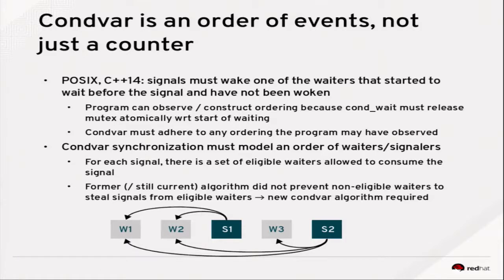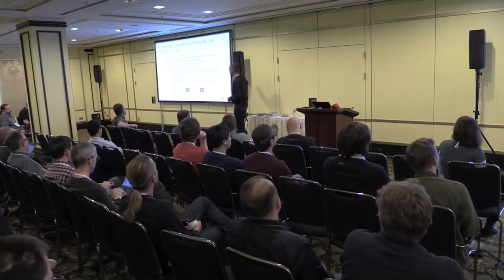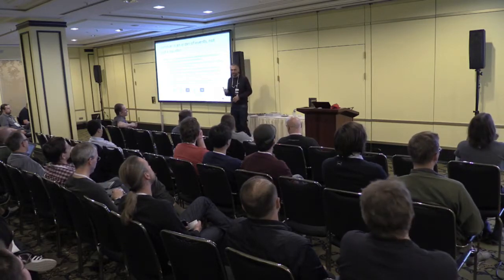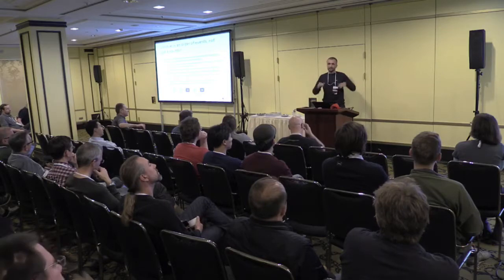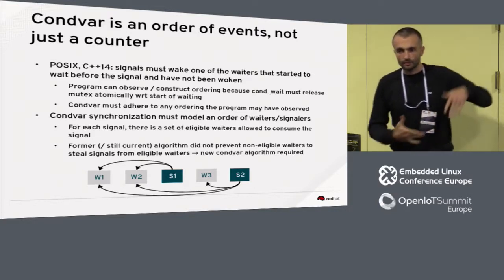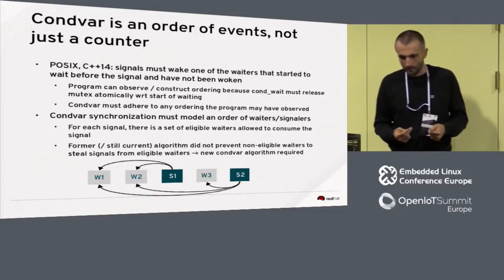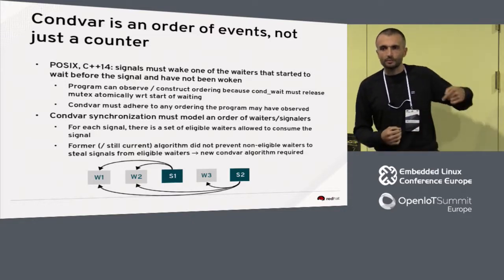The problematic thing is that the condition variable is not a counter — it's not like a semaphore or lock, which either has tokens or is acquired or not. The condition variable is essentially an order of events. This is what POSIX clarified, and also what C++14 specifies in terms of requirements on condition variables. The requirement is that signals must wake threads — one of the waiters that started before them — because the program can observe or construct an ordering of waiters and signals, since the mutex is released atomically with starting to wait. The counter-implementation must adhere to any ordering the program may have observed.